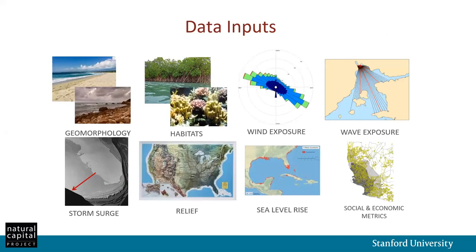The data inputs for the model are rasters and shapefiles that speak to a number of different shoreline characteristics. The model takes into account information about shoreline geomorphology, the extent and type of biotic and abiotic habitats, exposure to wind, waves, and potential for storm surge, coastal elevation (also known as coastal relief), sea level rise, and information about social and economic metrics along the coastline.